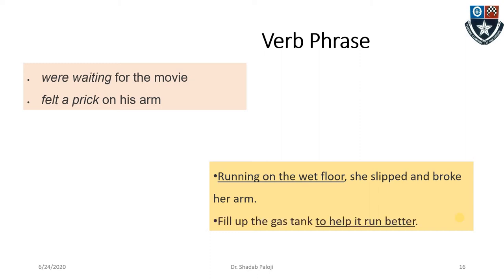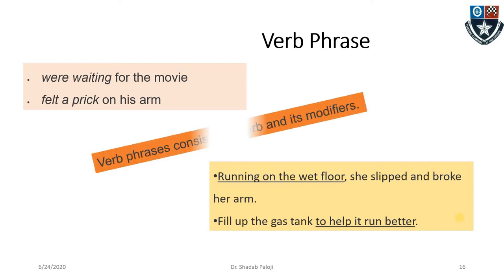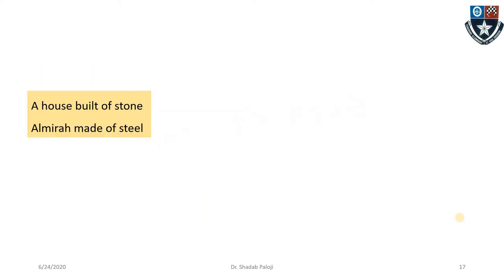'Fill up the gas tank to help it run better.' Here, 'fill up the gas tank' is complete in itself, but 'to help it run better' is an incomplete statement — and therefore it's a phrase. It is a verb phrase because the focus is on the verb 'help': why do we want to fill up the gas tank? So that it can help it run better. Verb phrases consist of the verb and its modifiers, which are often adverbs or adjectives and other nouns.